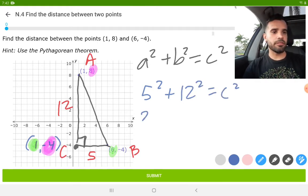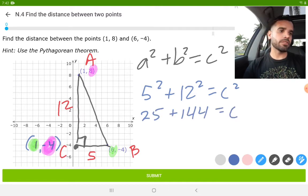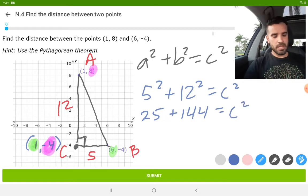Five squared is equal to 25. 12 squared is equal to 144. And we're saying that those two added together are equal to C squared. 25 plus 144 is equal to 169.